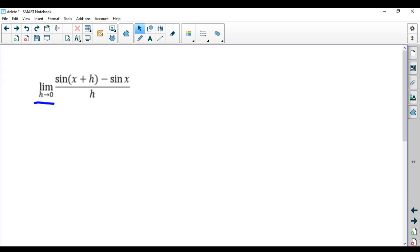So first of all, when you plug in zero for h, you'll get sine of x minus sine of x, which is zero, over zero. That's an indeterminate form, but it is an indeterminate form that we can use L'Hopital's rule for.